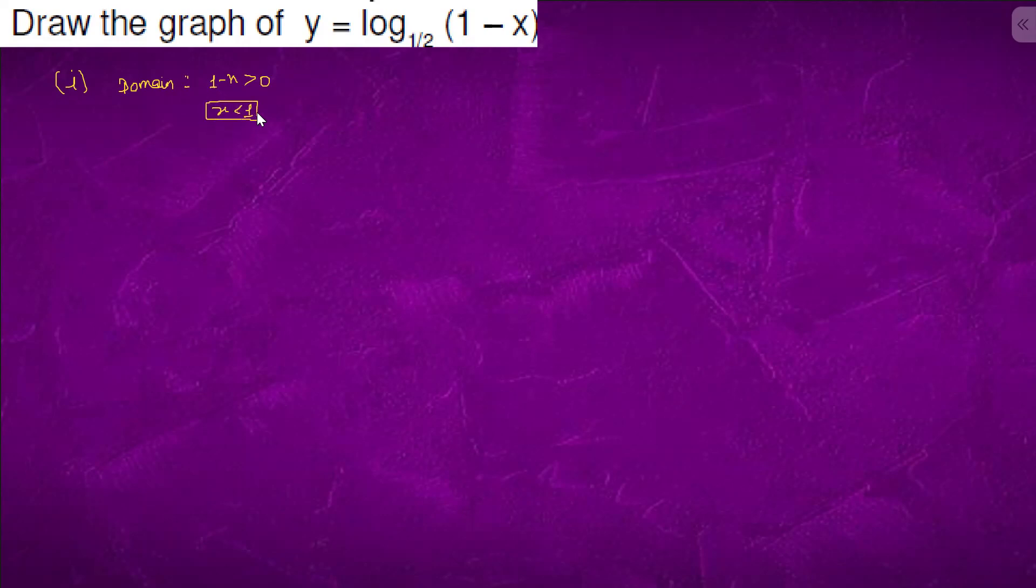x should be less than 1 and we know that first draw the coordinate axis. We know that x should be less than 1 and the graph for 1 by 2 ln x, 1 by 2 ln x is somewhere like this.